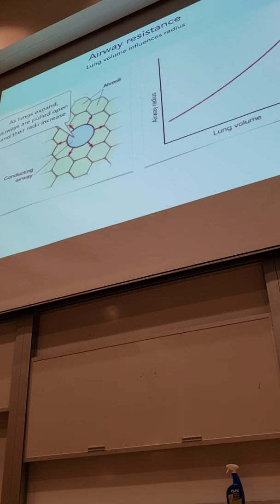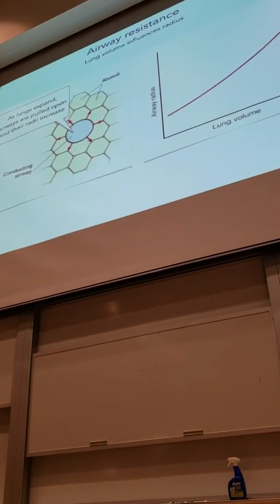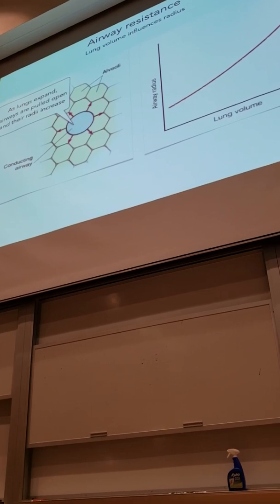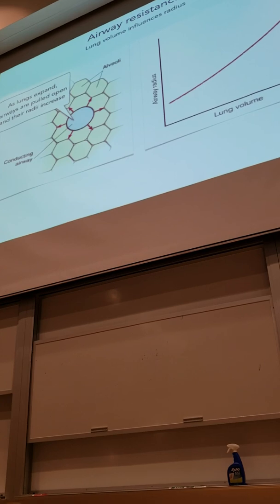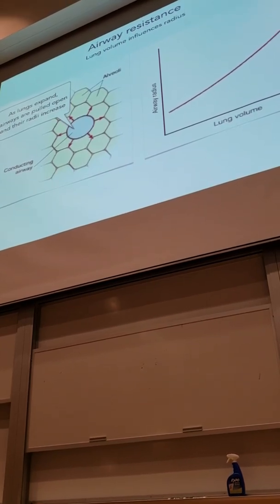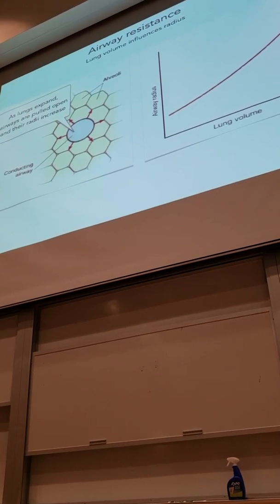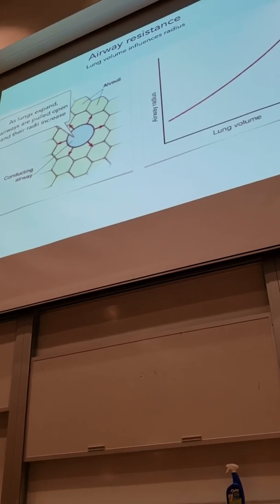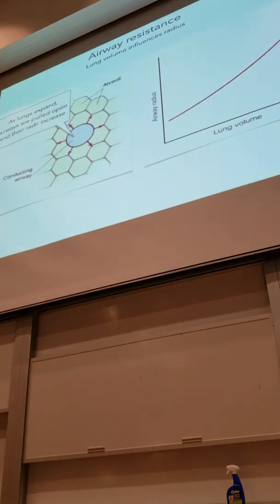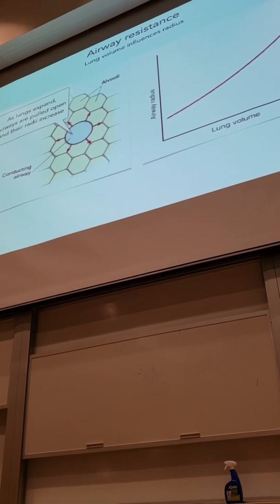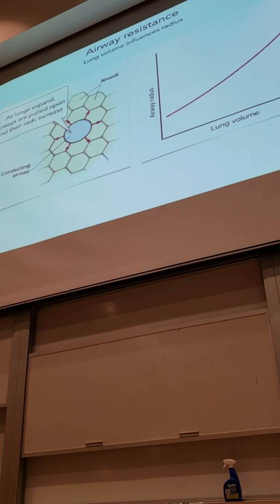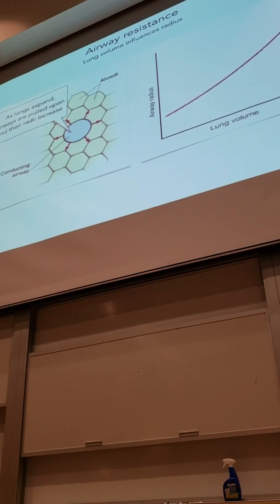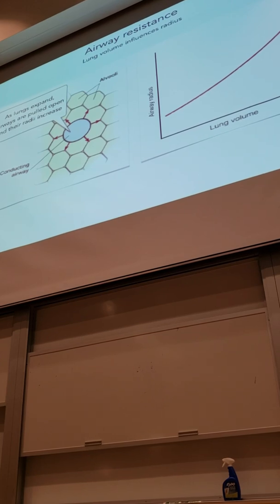One thing about the radius: as a normal part of breathing, as our lungs inhale and exhale, we actually change the radius of our airways. If all of your lung tissue is expanding, those alveoli — which are tethered to one another and to the larger airways — actually have the effect of pulling the airways open. So as the lung is expanding, all of those tissues are pulled wider open. As lung volume increases, the airways actually increase as well — the more you inhale, the less resistance you encounter to inhalation.